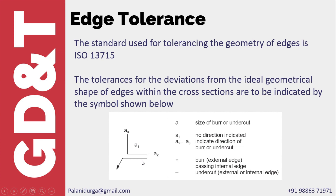Along with the tolerance value, we can specify plus and minus signs. If we provide a plus sign for external edges, a burr is allowed. If it is an internal edge, then passing occurs — that is, material is added to the sharp edge on the internal surfaces. If we provide a minus sign, then undercut is permitted.